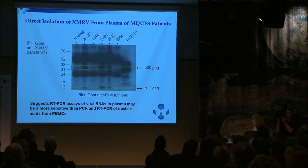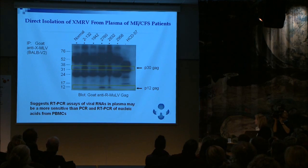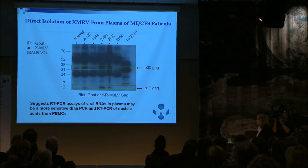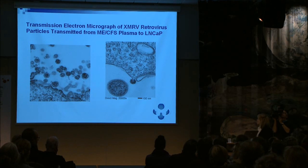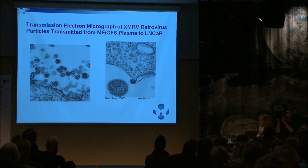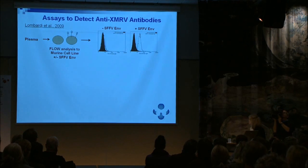This suggests that RT-PCR assays of RNA in the plasma may be a more sensitive way to detect XMRV from these patients. The reviewers quite rightly asked: if there's that much virus in the plasma, the patient should be making an immune response. And we'll go on to show you that.